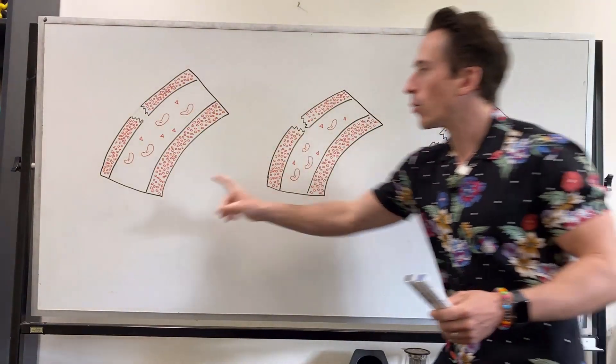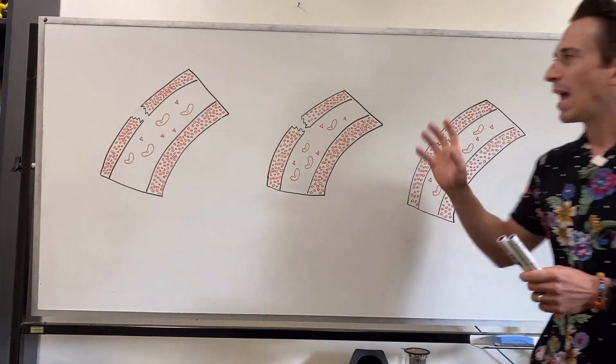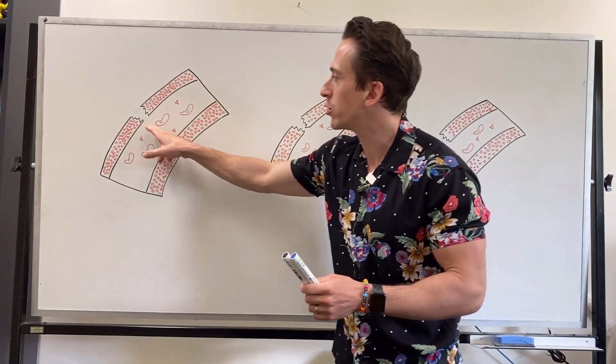Now hemostasis has three steps. We're going to look at step one, two, and three, and it occurs when you have damage to a blood vessel wall.